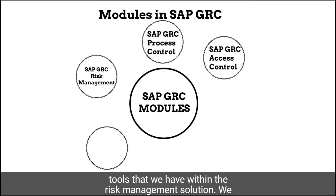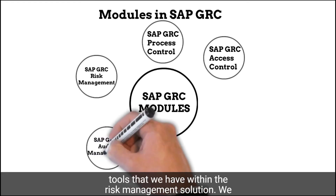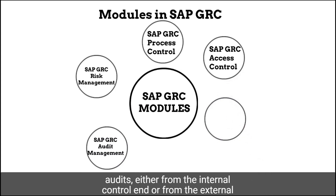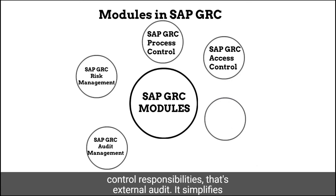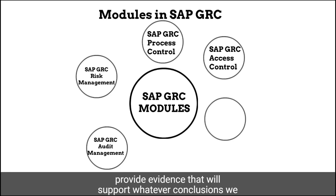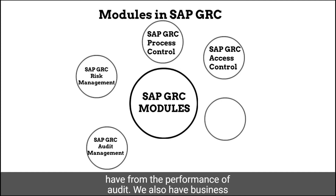There are various tools within the risk management solution. We have audit management, which simplifies the performance of audits — either from the internal control end or from external audit responsibilities. It simplifies the provision of documents and information, the checks that are performed, and the documentation required to provide evidence that will support whatever conclusions we draw from the performance of audits.